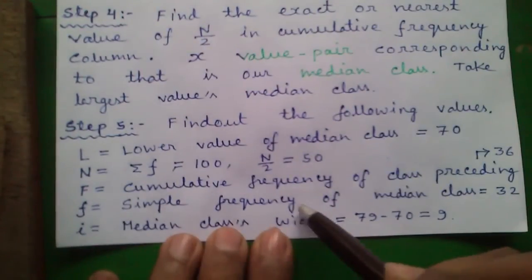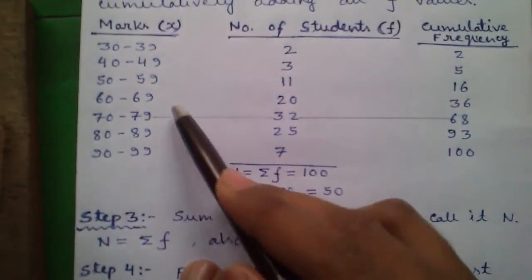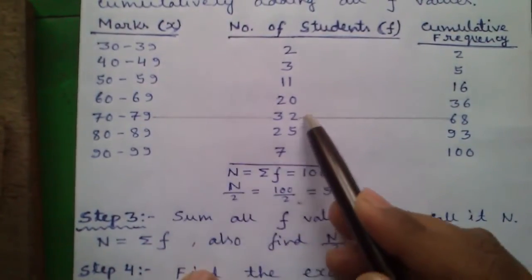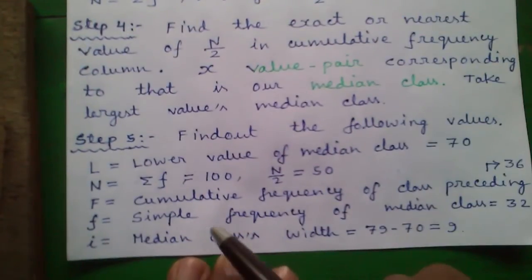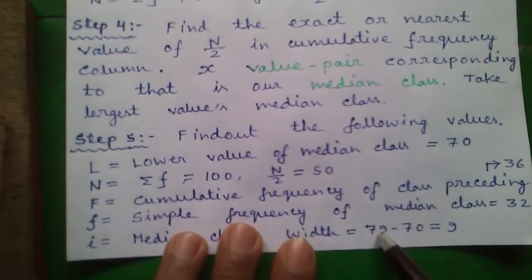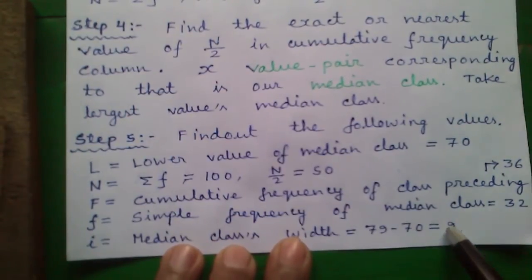Small f: simple frequency of median class is 32. So our median class is 70 to 79 and its simple frequency is 32. And small i equals to median class's width. Our median class is 70 to 79, so its width is 79 minus 70 is 9.